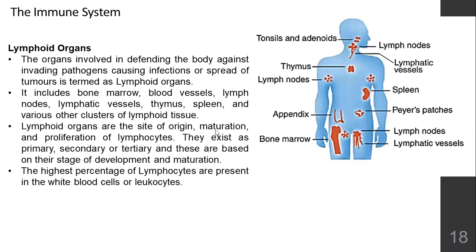The organ systems involved in your immune system are the lymphoid organs. Lymph nodes are present in many places: tonsils, adenoids, near the underarms, in the groin area, near the pancreas, and Peyer's patches near the intestine. These lymphoid organs are important to collect, produce, and keep lymphocytes in circulation. These organs are involved in defending your body against pathogens causing infection and even controlling the spread of tumors.